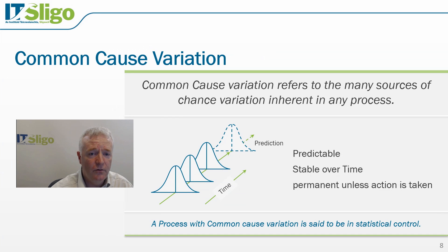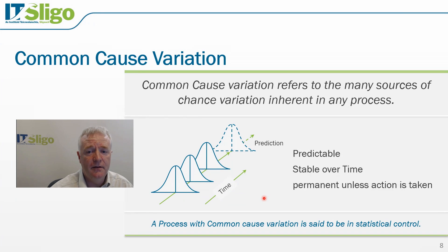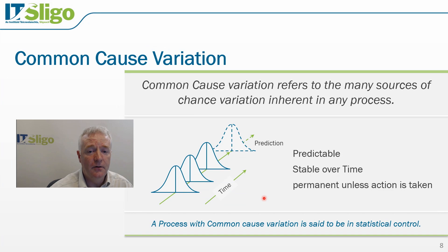Common cause variation refers to the many sources of chance variation inherent in any process. Here we see variation occurring over time — at 8 o'clock, 9 o'clock, 10 o'clock — and we can predict what the variation at 11 o'clock or 12 o'clock is going to be, because our process is predictable and stable. Common cause variation exists in everyday life. An example is the writing of our signature. If I write my signature multiple times and overlay them, the signatures will not be exactly the same. However, it is predictable, and this predictability allows any check I write or document I sign to be accepted.